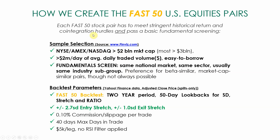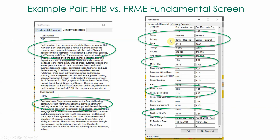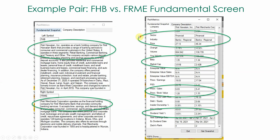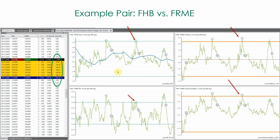So how do we create these FAST50? As we mentioned, each stock pair has to meet stringent historical return and co-integration hurdles, and pass that basic fundamental screening we showed you here. It has to be ticking all of our filters on the backtesting first, and then we do the fundamental screen, and if it passes that, then it becomes a FAST50 US equities pair.